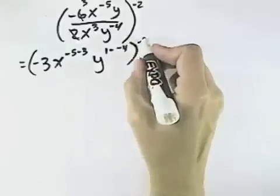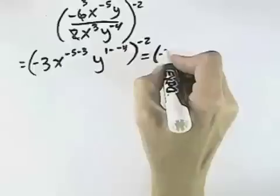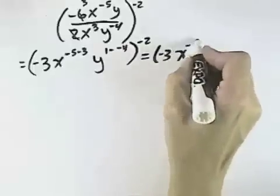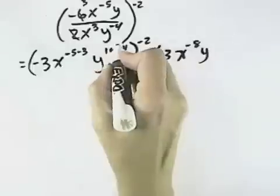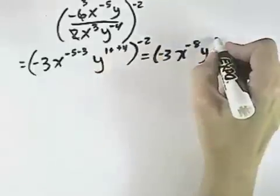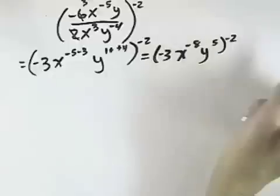And that will all be raised to the negative second power. So this is negative 3x to the negative 8th, y, the minus negative 4 becomes plus 4, so y to the 5th, all raised to the negative 2nd.